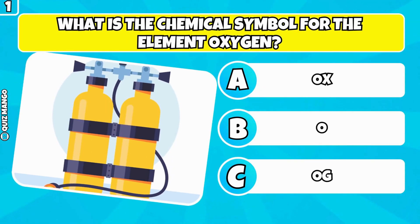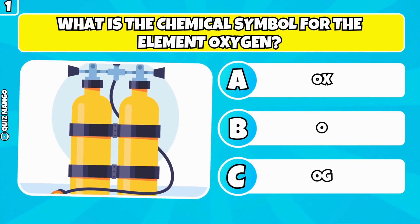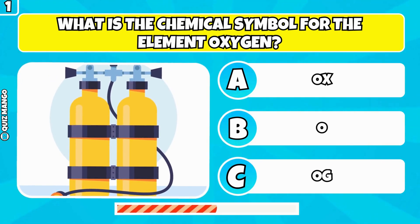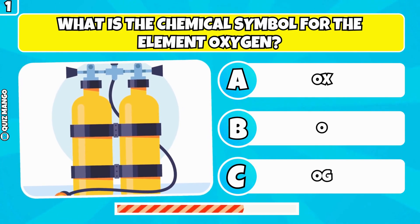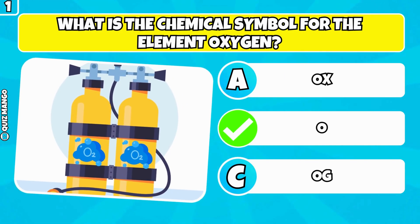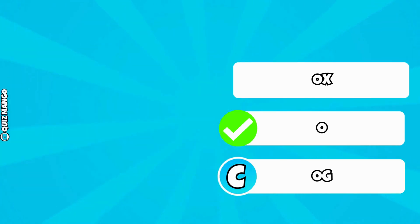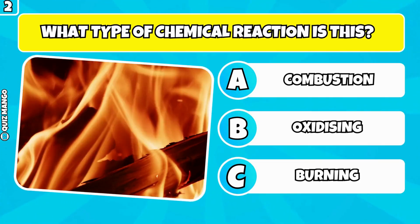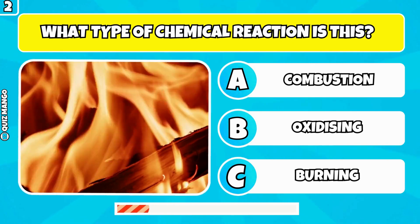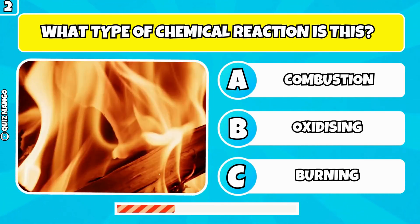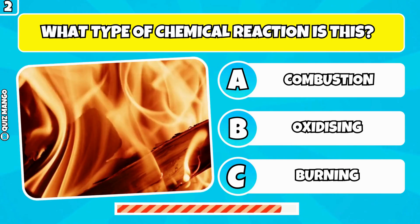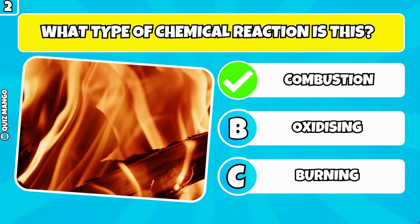What is the chemical symbol for the element oxygen? It's O. What type of chemical reaction is this? It's combustion.